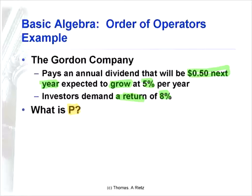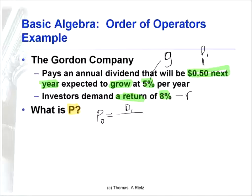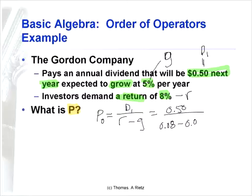Let's develop notation: D1, return R, growth g. The relationship between growth rates, dividends, and returns — especially when we say the growth rate is effectively a constant per year — should cue us to use the Gordon Growth Model: P0 equals D1 divided by R minus g. Looking at this, we know everything in this relationship: we know the dividend, we know the return, and we know the growth rate. So our solution plan is simply to plug these things in and solve for the price.